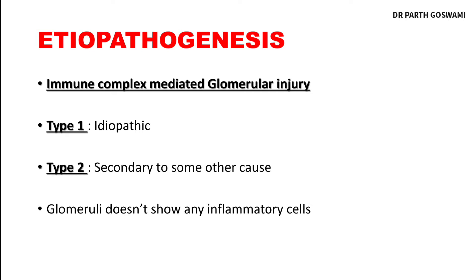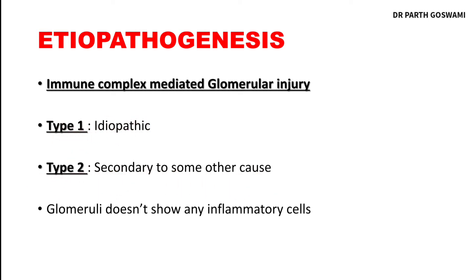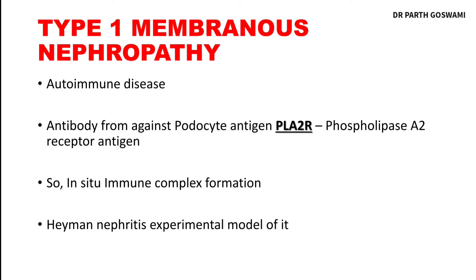The etiopathogenesis of membranous nephropathy involves immune complex mediated glomerular injury — the pathogenesis is immune complex deposition in the glomerulus. This can occur due to two reasons: Type 1 is an autoimmune disorder while Type 2 is secondary to some other systemic disease. Due to these two conditions, immune complexes form and get deposited in the glomerulus, leading to nephrotic syndrome. Importantly, the glomerulus does not show any inflammatory cells.